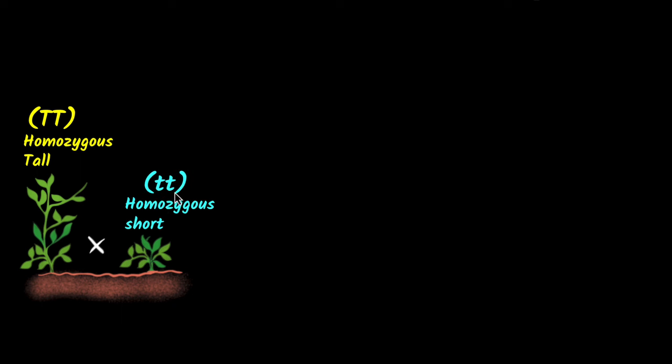Similarly, here also you have two copies, two alleles of the gene of the same version, small t and small t. And again, if you're wondering why we're using small t for short, it'll make sense a little bit later. But anyways, we are crossing this with this.